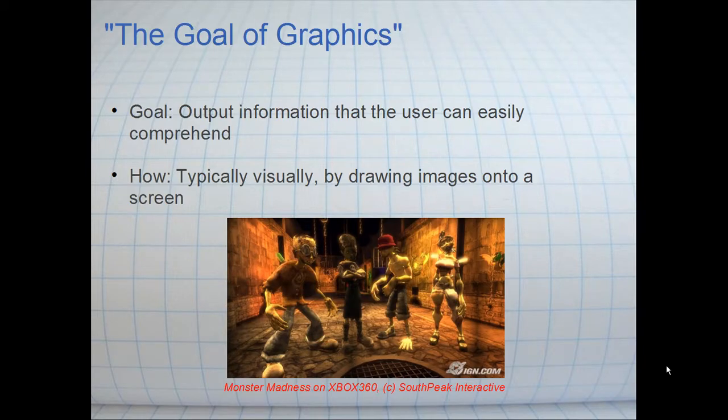So our goal of graphics is basically to output information that the user can easily comprehend. And the way that we typically do this is visually. When we talk about computer games, we have a few output methods, but typically we're talking about a screen or a computer screen or a television, but they all work the same way.